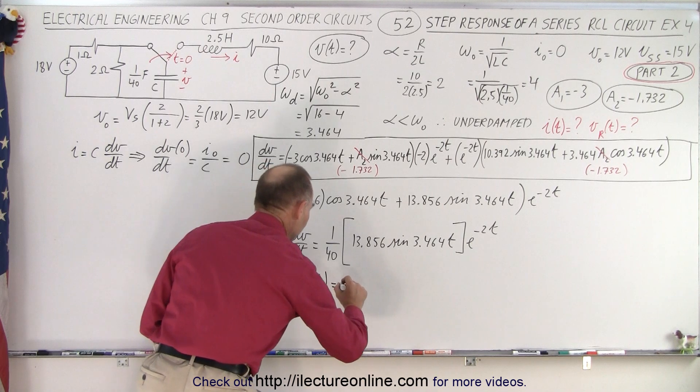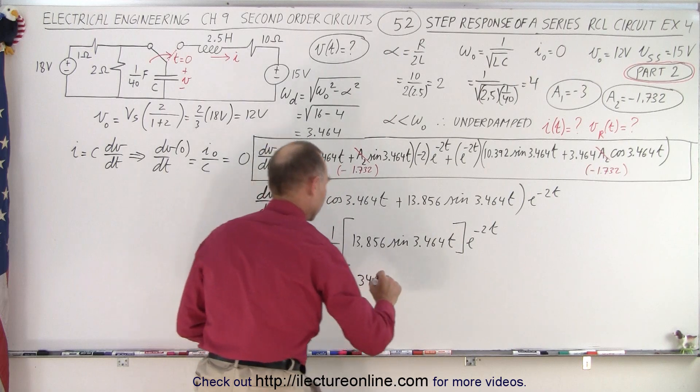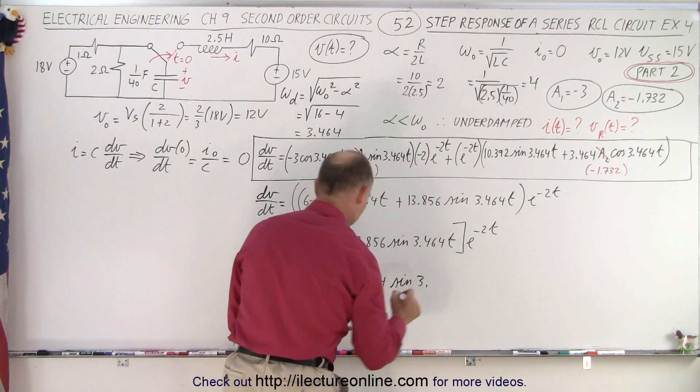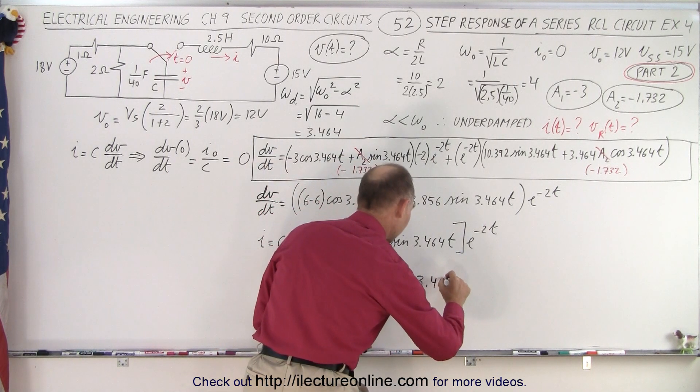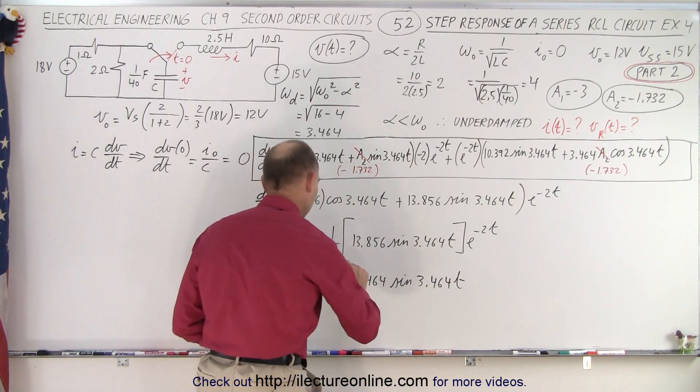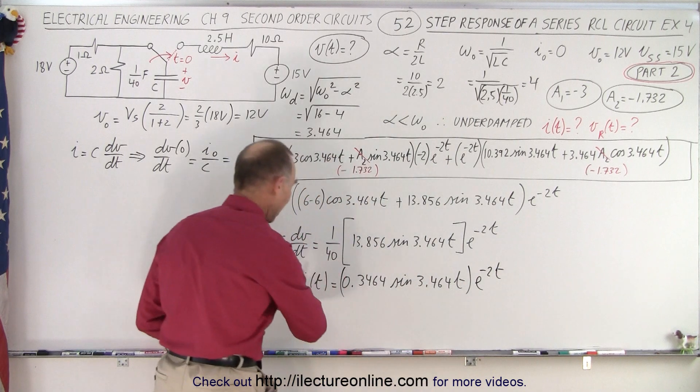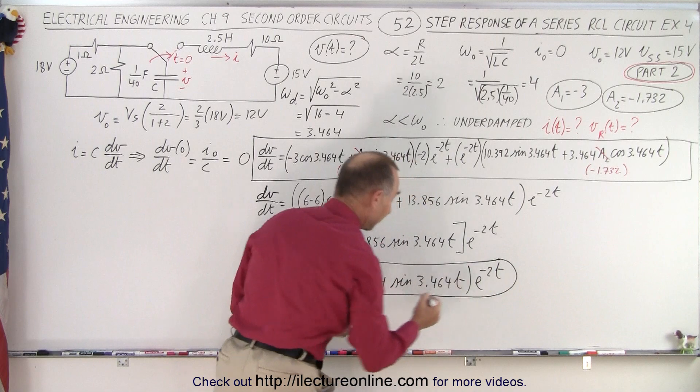So now we have the current as a function of time equal to 0.3464 times the sine of 3.464t. That's kind of interesting. Notice that the number is just one-tenth of this number right here. And then we multiply it times e to the minus 2t. So now we have an equation that gives us the current through the circuit as a function of time.